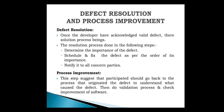Process improvement suggests that participants should go back to the process that originated the defect, understand what caused it, then do validation and check the improvement of the process. After defect resolution, you need to retest it. The process repeats until there is assurance that the defect is fixed and the process meets customer requirements.